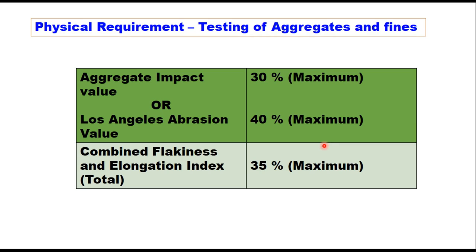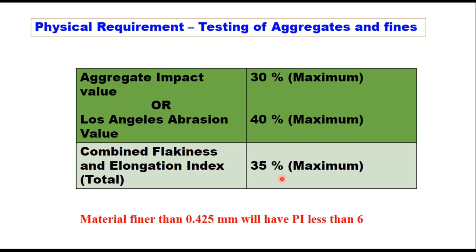Physical tests are conducted on aggregates and fines to determine their suitability for use in WMM or crack relief layer. Impact value should be less than 30%, or abrasion value less than 40%. Combined flakiness and elongation indices should be less than 35%, and the fine material passing 425 micron should have a plasticity index less than 6.